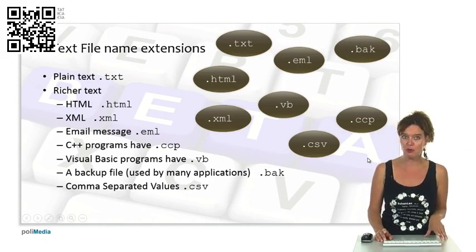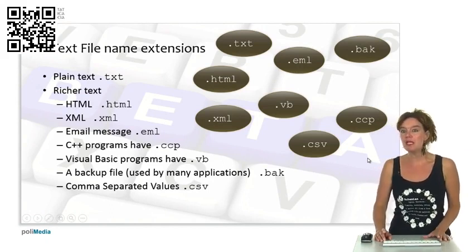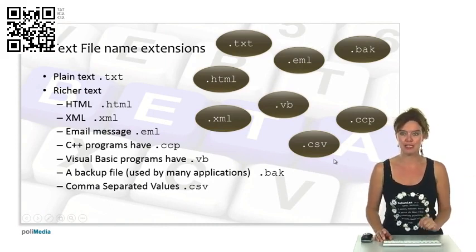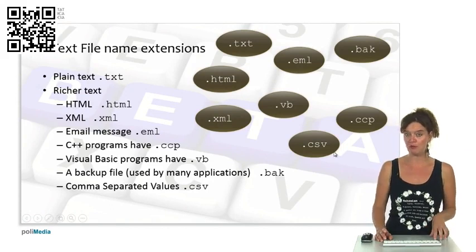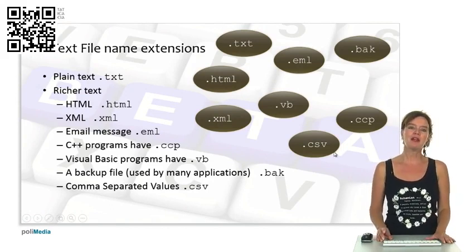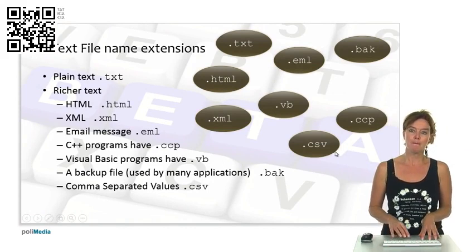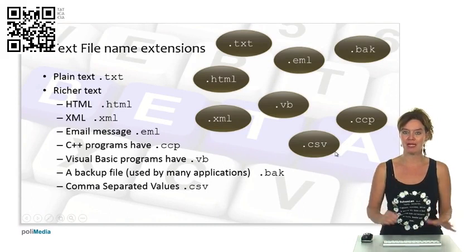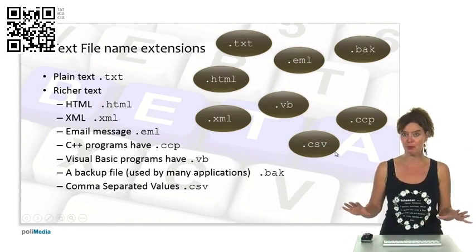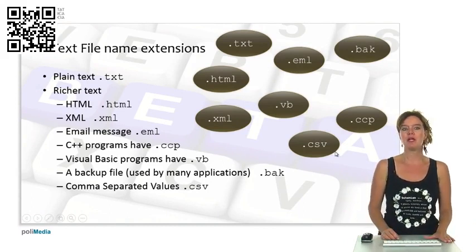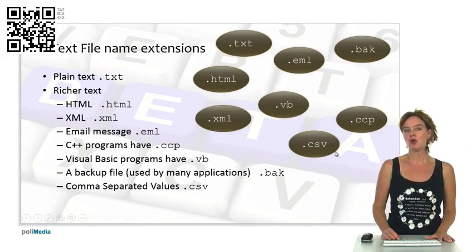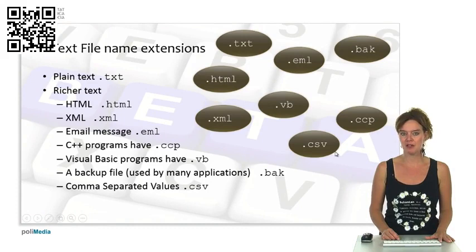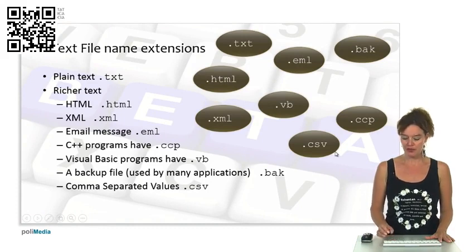.vb is mostly used if you program Visual Basic, .java is obviously used if you program Java programs, and then there's .bak, which is a backup file made by an application that's true for many applications. We have comma-separated values, which are CSV files, and these are text files that can define tables by separating them with commas.